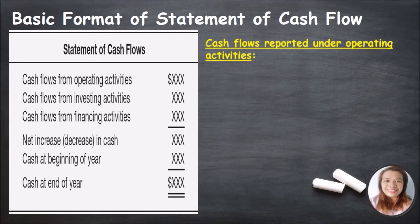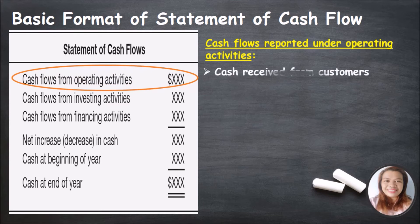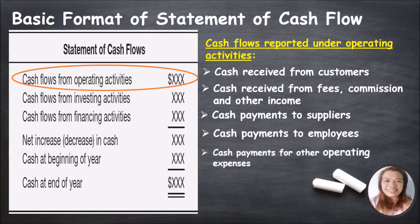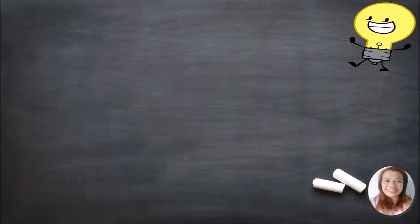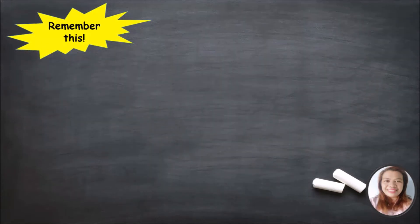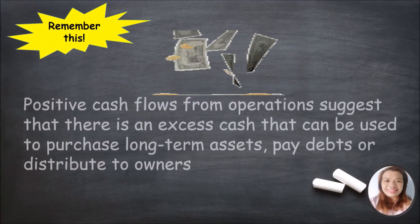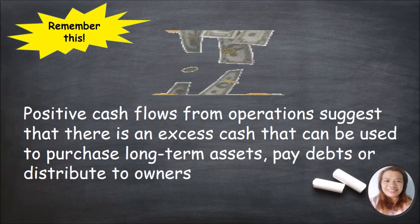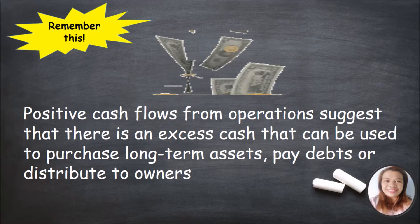Cash flows reported under operating activities include: cash received from customers, cash received from fees, commissions, and other income, cash payments to suppliers, cash payments to employees, cash payments for other operating expenses, and interest payments. Cash flows from operations reveal the present ability of the company to generate cash. Positive cash flows from operations suggest there is cash that can be used to purchase long-term assets, pay debts, or distribute to owners.